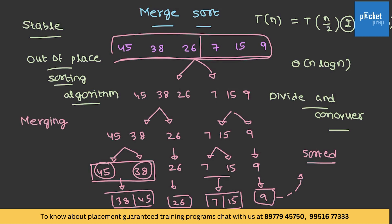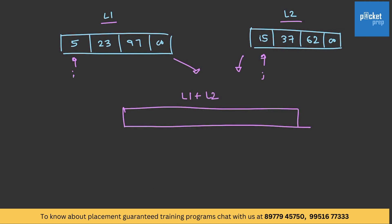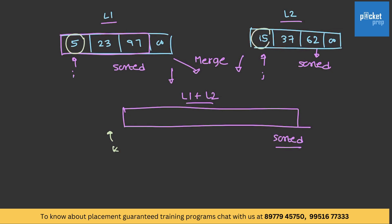Let's take an example to understand how merging works. Consider this as L1 and this as L2. We need to find an array by merging both of them. We make a pointer to L1 and call it i, and another pointer to L2 called j. We have to create a list of size L1 plus L2 and merge both of them. Understand that whenever this list was created by merging, all elements will already be sorted. So when we create a new list by merging both, it also has to be sorted. Let's name the pointer here k.